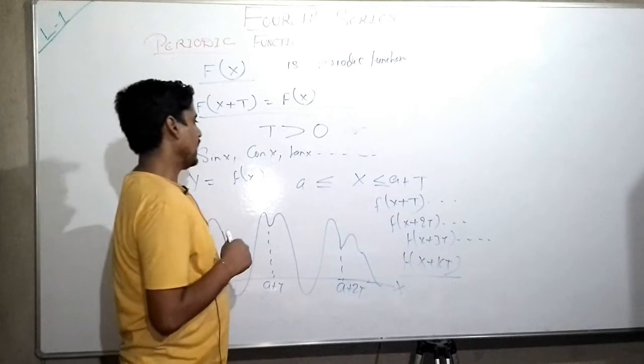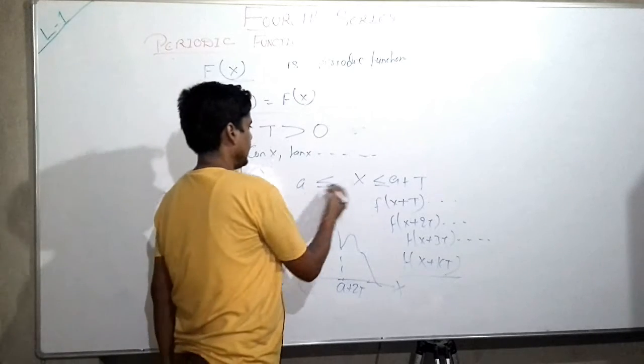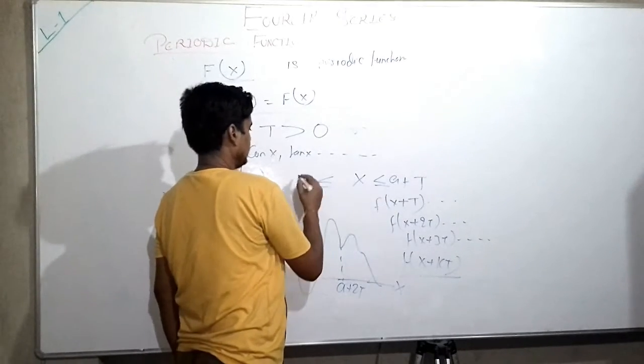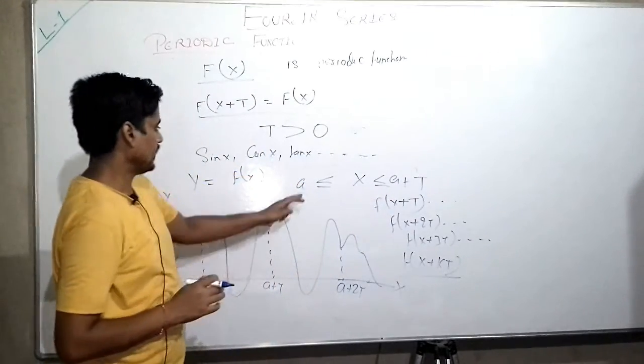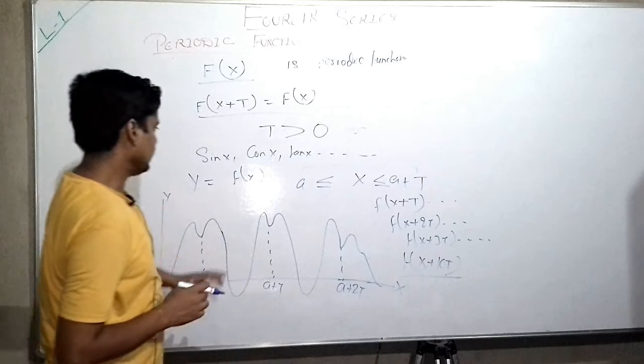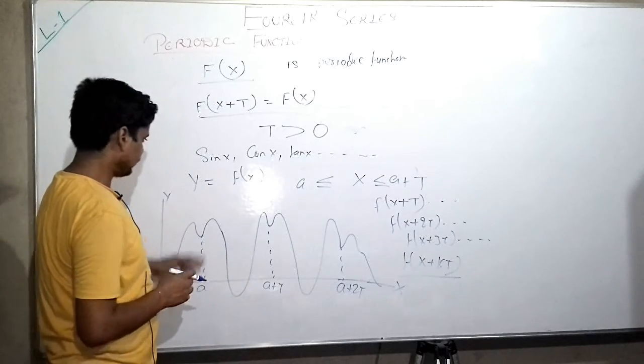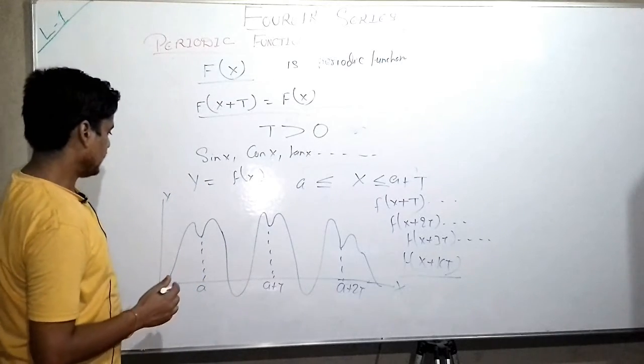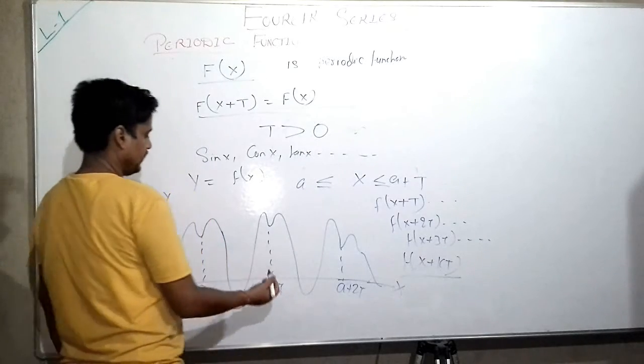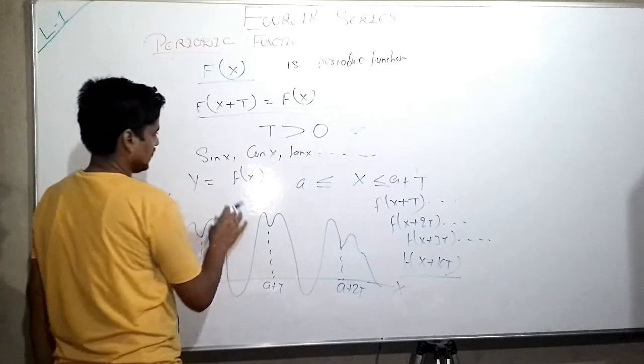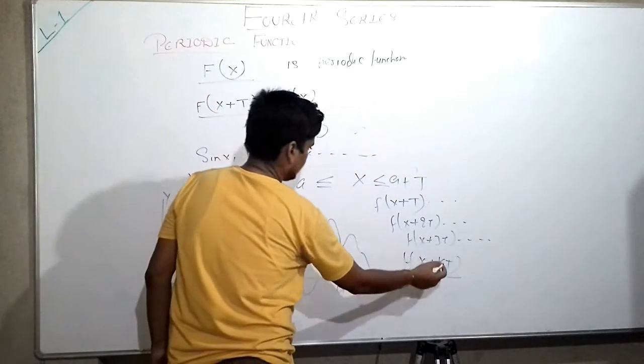Suppose y = f(x) where x is from a to a + T. This is the time interval for x. If we draw the graph of this function, we can see that it is repeating after the interval T.